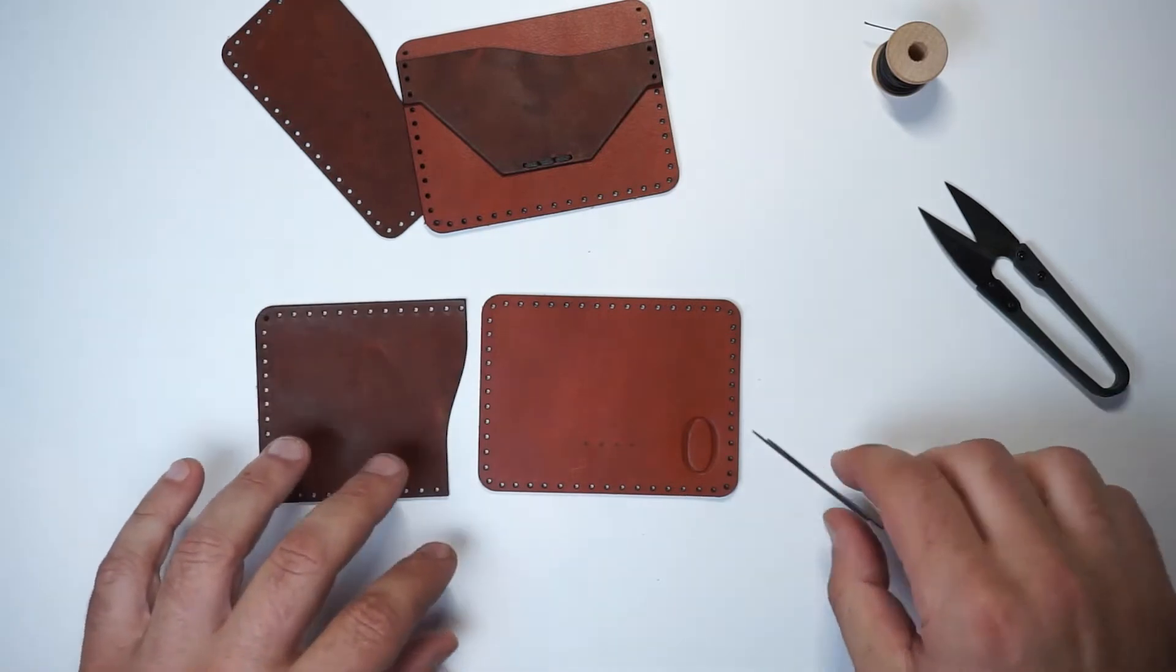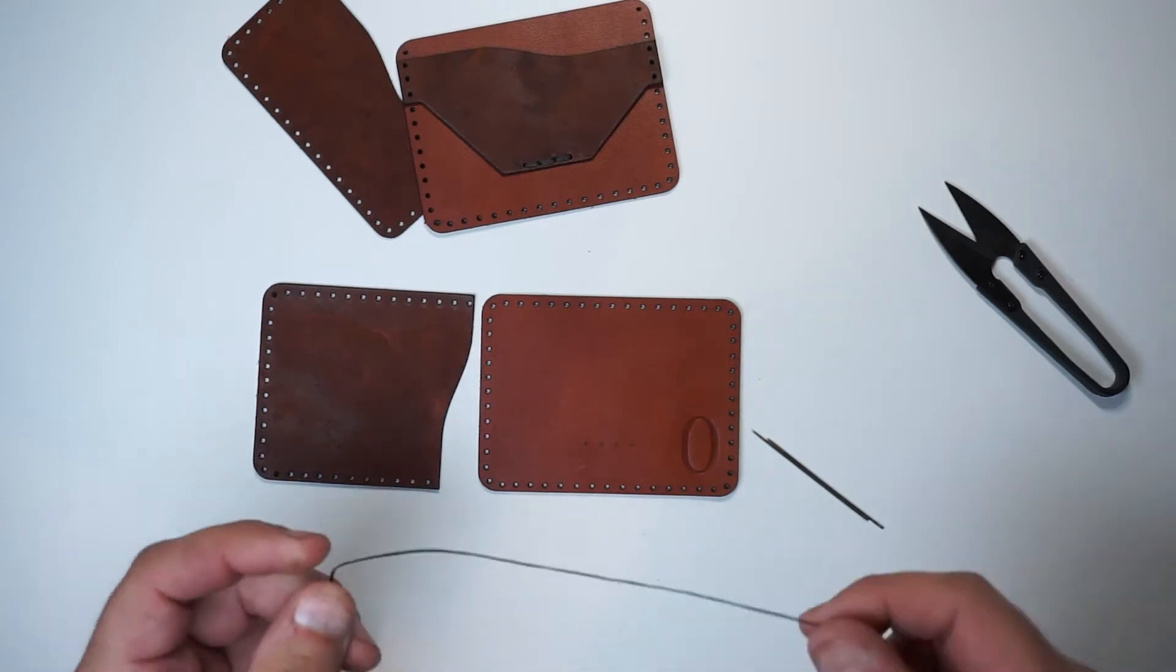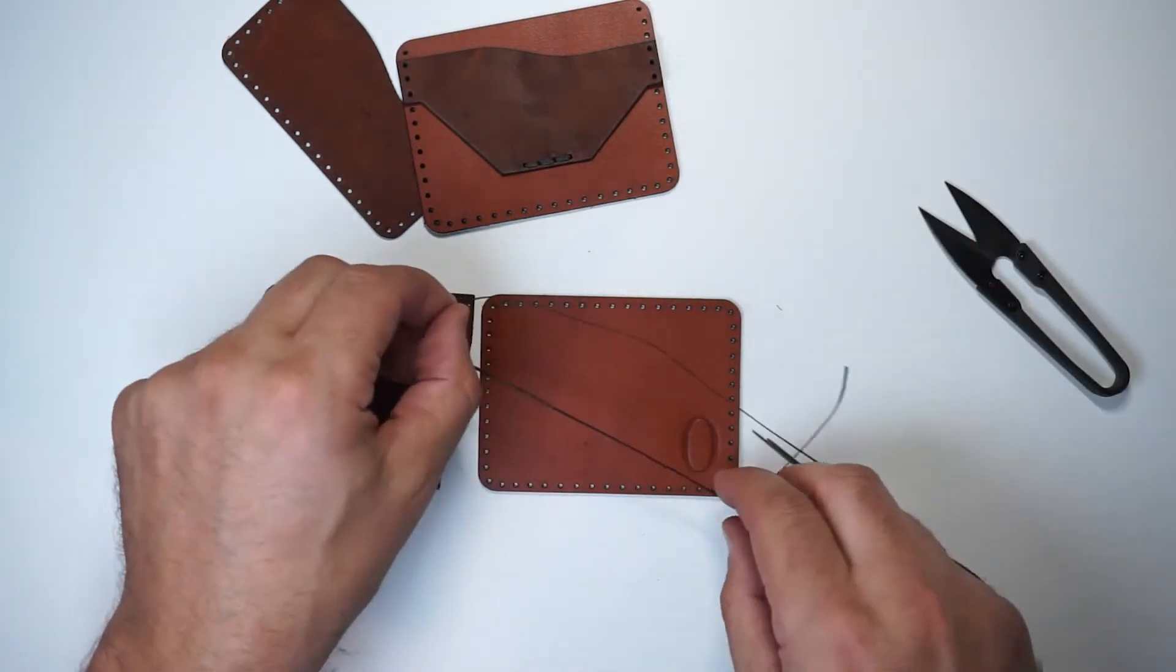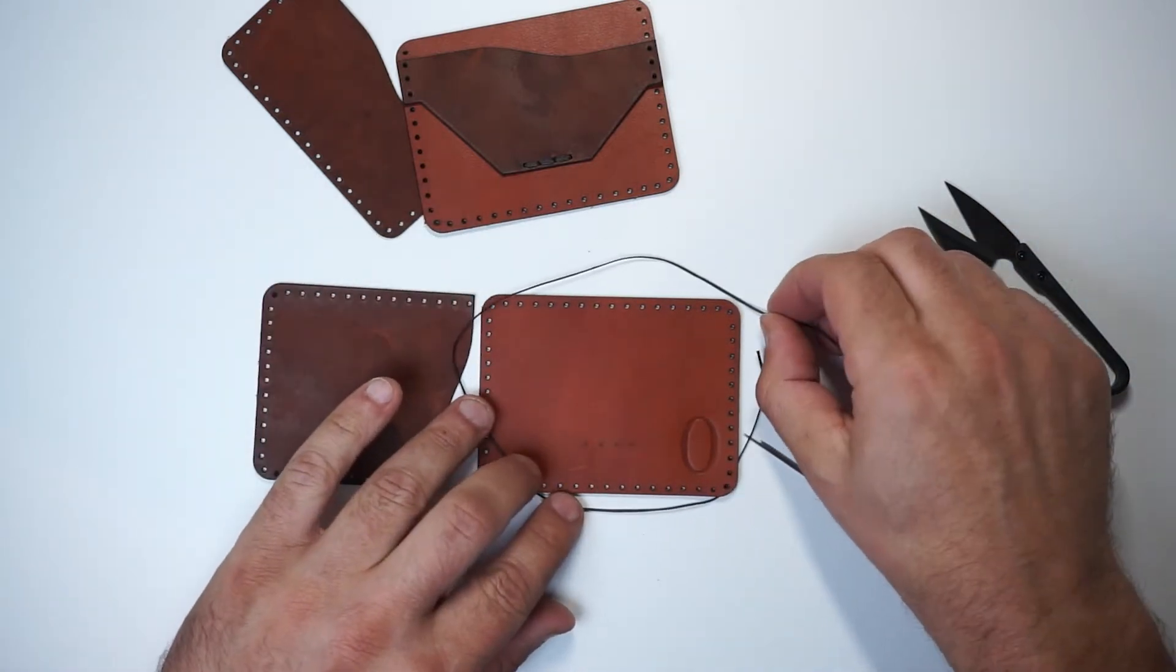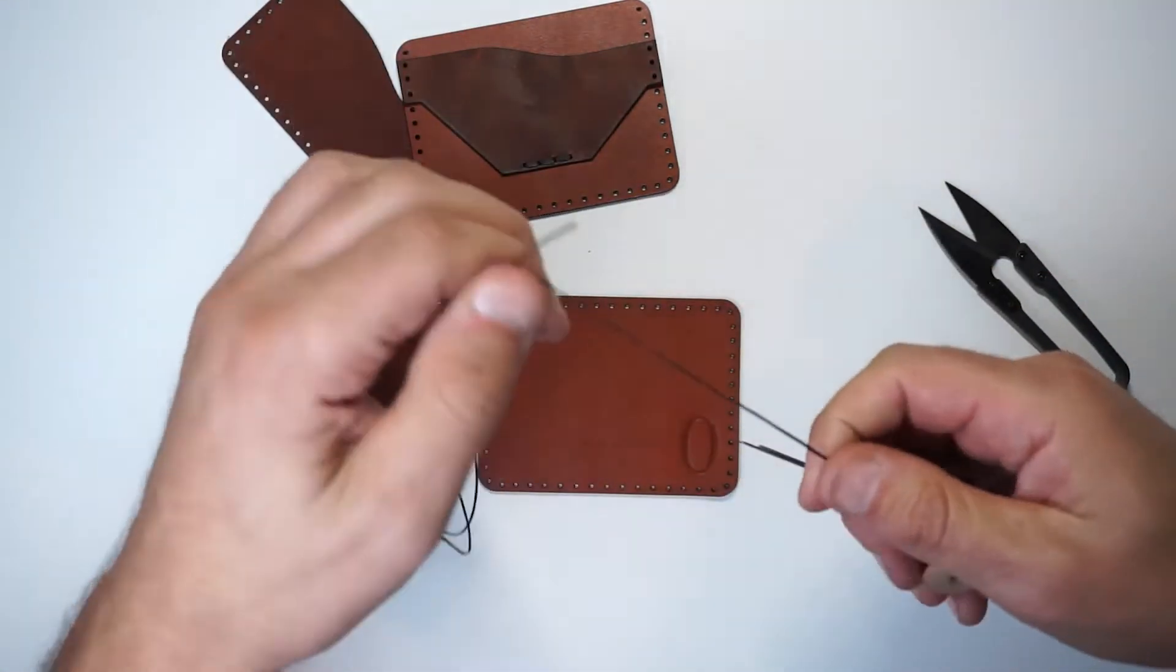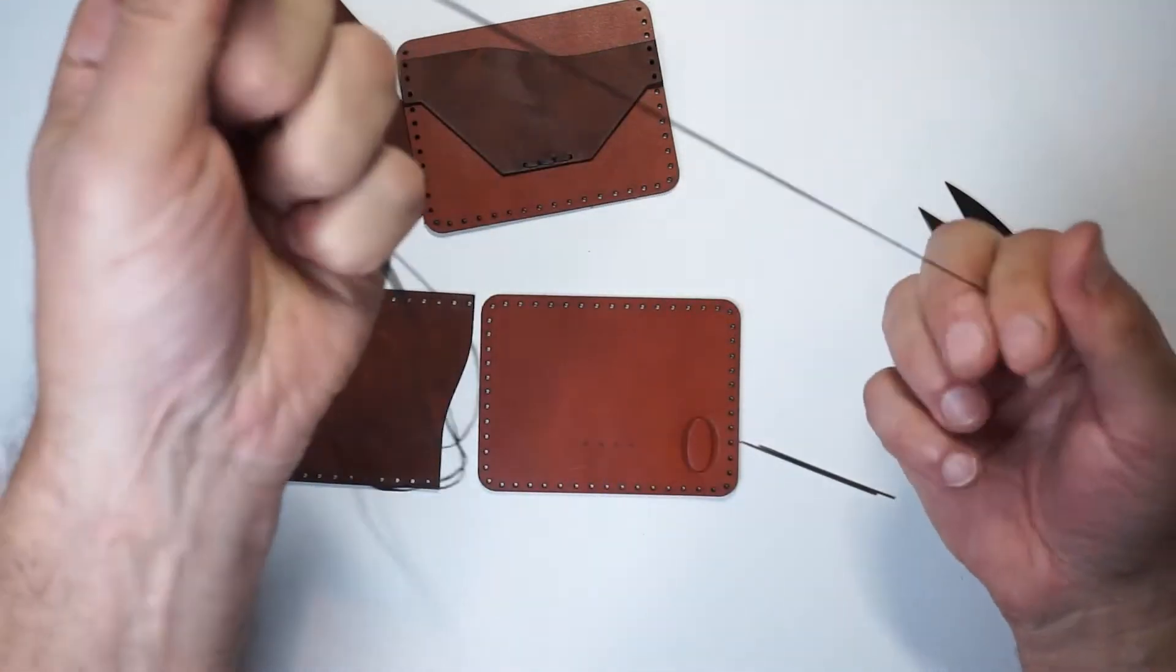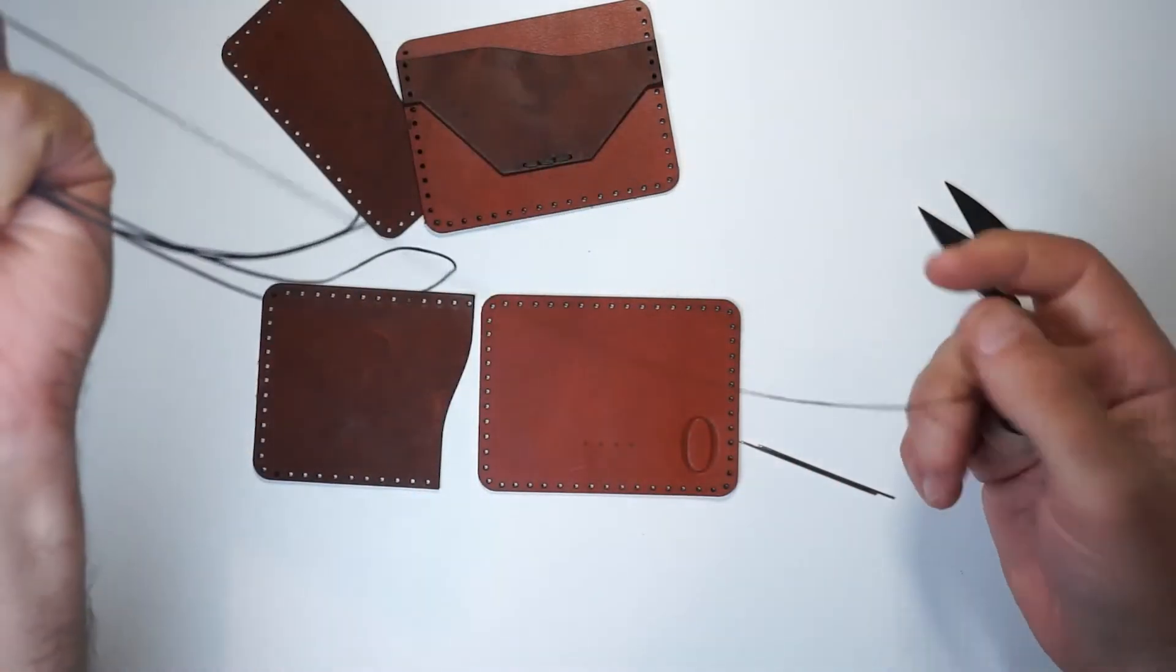But for right now, let's get our needles threaded and start this final stitch line on this wallet. We're going to need about six feet of thread, and in this case, we're going to measure out about five times the stitch line. So you can roughly put your thread around the length of your stitch line, and then it's one, two, three, four, and five.